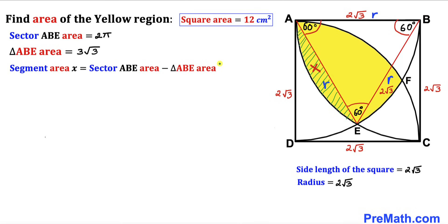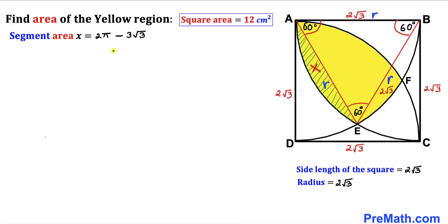Recalling our equation: segment area x equals sector ABE area minus triangle ABE area. Filling in the values, x equals 2π minus 3√3. So the area of segment x is 2π − 3√3 centimeters square.